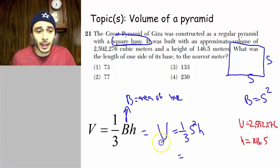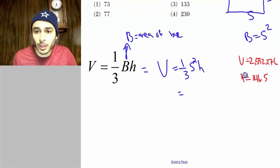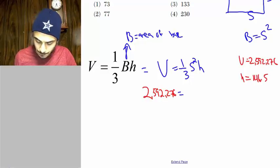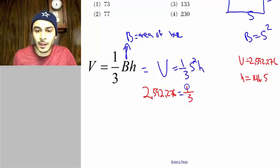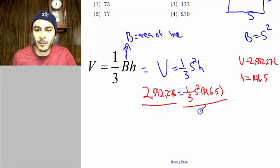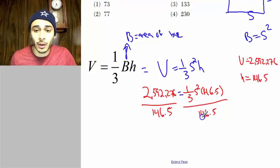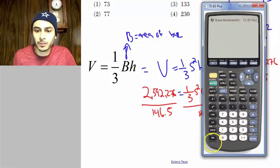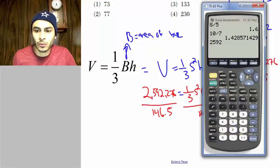So it's just a matter of plugging in and solving. So I'm going to plug in for the volume. So the volume was 2,592,276 equals one-third side squared. So I'm going to leave that as unknown because I'm looking for that. And then the height is 146.5. All right, so what I'll do first is I'll divide both sides by 146.5. You might not do it this way. I'm doing it this way for my students because I think it'll help my students. So then we're going to have 2,592,276 over 146.5.